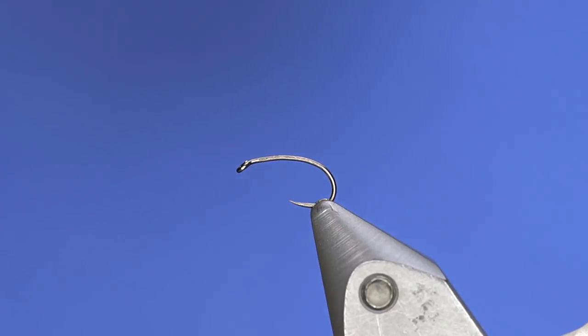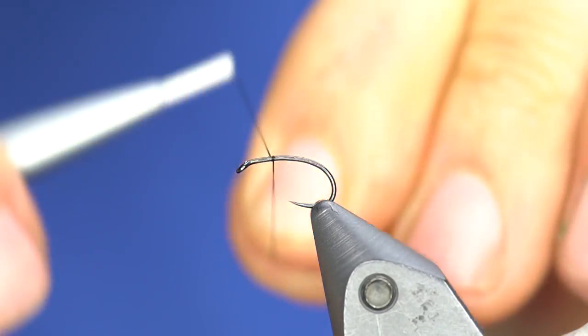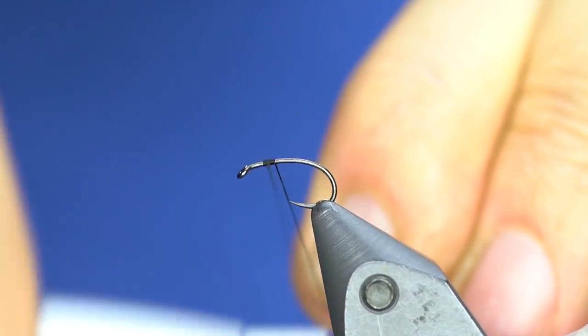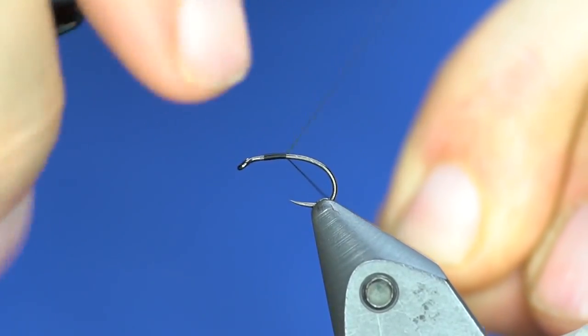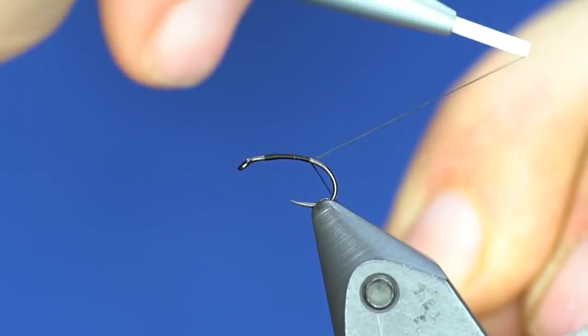This one's a pretty simple tie and it's going to use a quill body material that when I first saw it I was a little skeptical, but I love the way it looks and it's super durable, a lot more so than natural peacock quill. We're going to start off with a thread kind of midpoint here and I'm just going to work my way down.